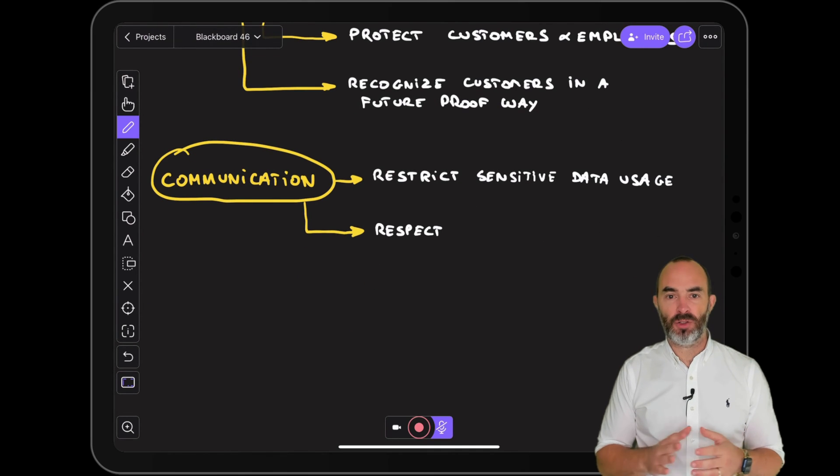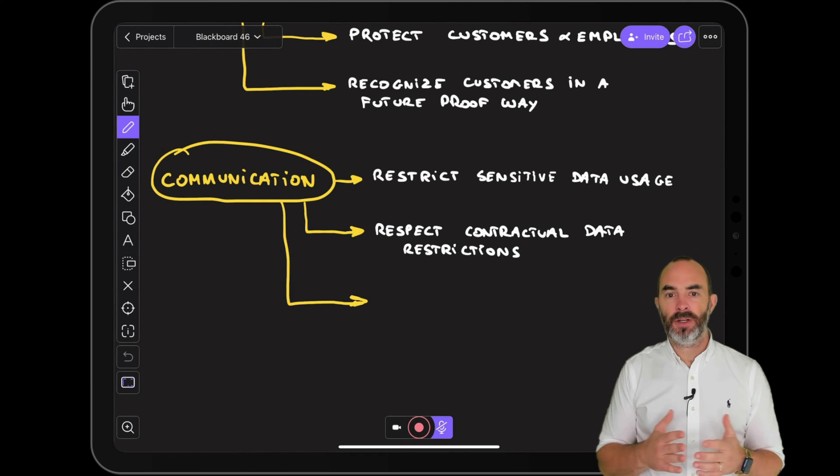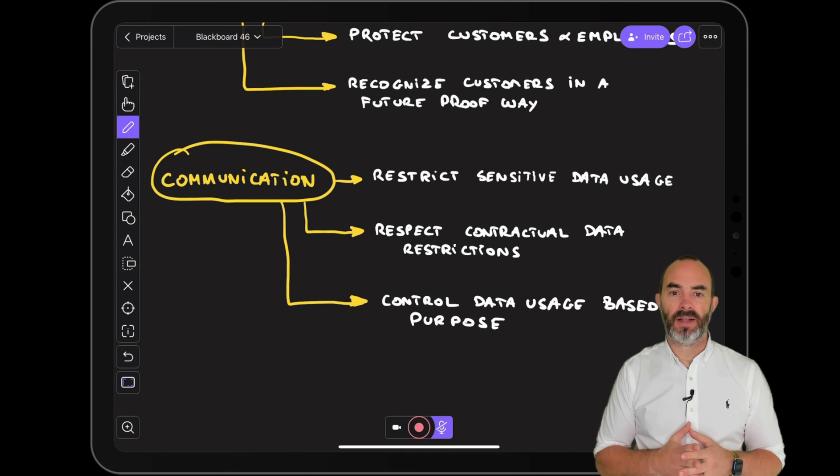When we speak about communication we speak about activation. Activation in the context of marketing touches several topics like segmentation and destinations that are used by the marketing teams.